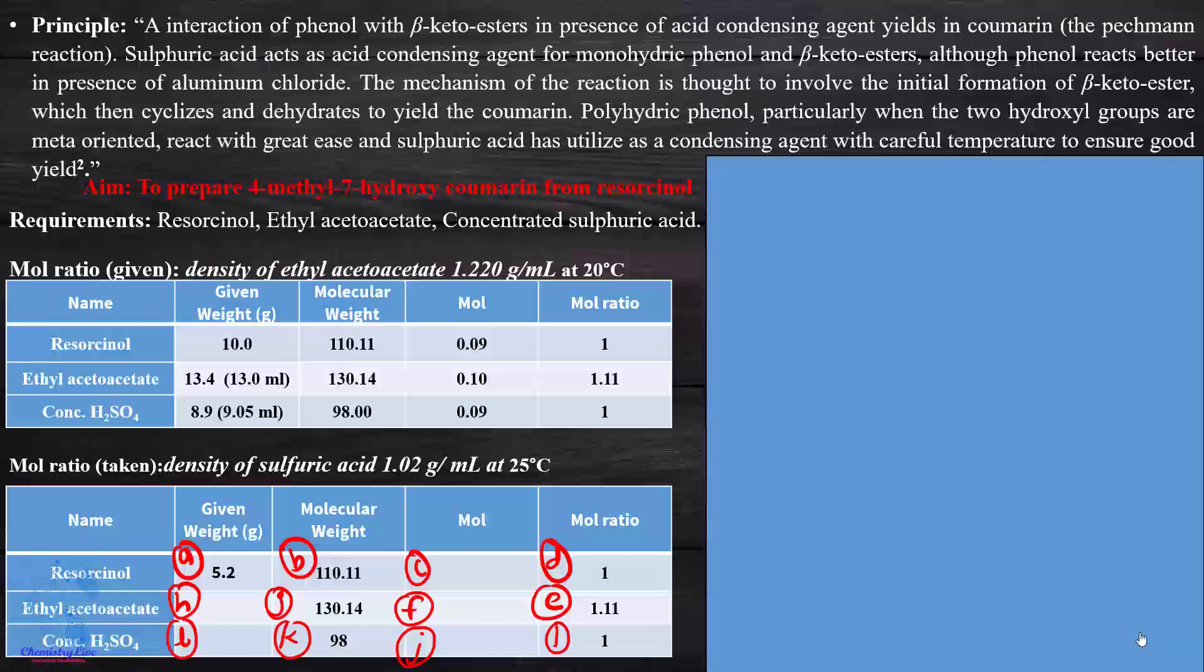In this slide we'll take a look at the principle involved in the preparation of coumarin. Interaction of phenol with beta-ketoester in presence of acid condensing agent yields coumarin. It's called the Pechmann reaction. Sulfuric acid acts as a condensing agent for monohydric phenol and beta-ketoester. Although phenol reacts better in presence of aluminum chloride, they ask to use either sulfuric acid or aluminum chloride.